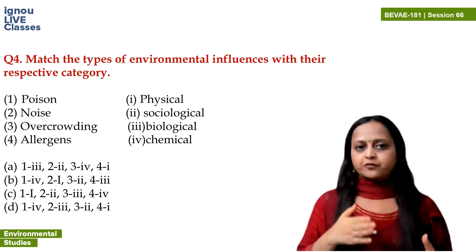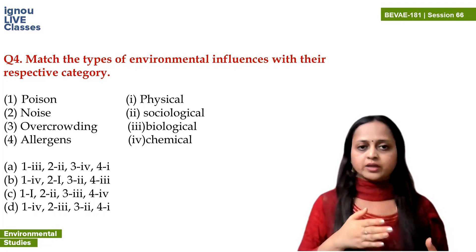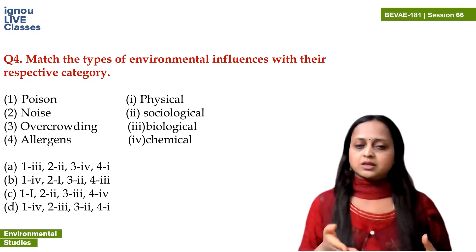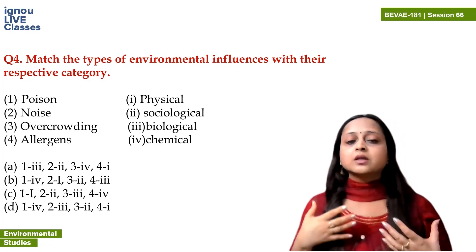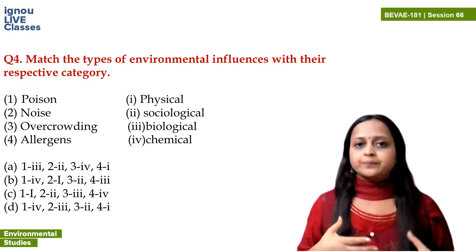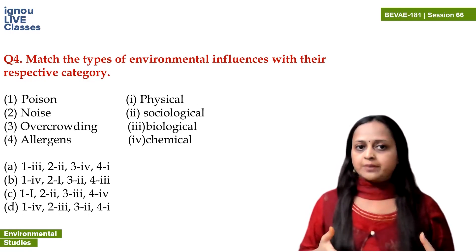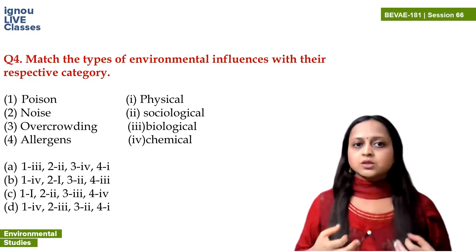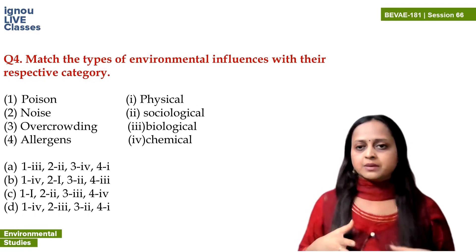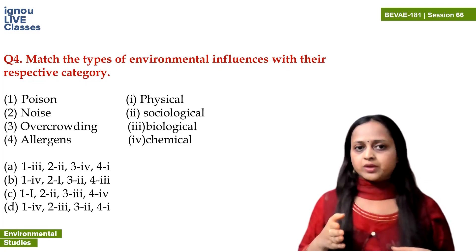In the options, we need to identify what each item matches. Poison — it is a chemical. So poison comes under the chemical category. Chemical corresponds to option D.